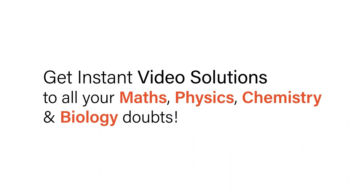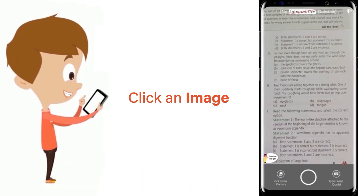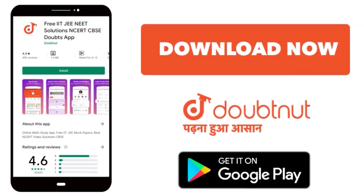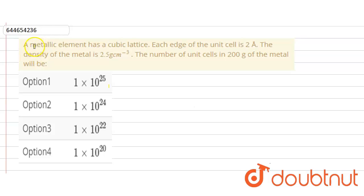With Doubtnut, get instant video solutions to all your math, physics, chemistry, and biology doubts. Just click the image of the question, crop the question, and get instant video solution. Download Doubtnut app today. Our question is: a metallic element